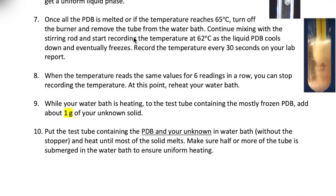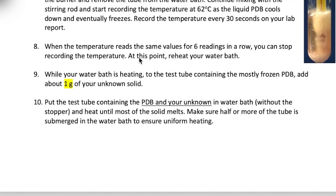As the PDB cools, its temperature will decrease. Start recording the value of the temperature when it reaches about 62 degrees Celsius. Keep recording temperatures in 30 second increments until the value of the temperature stays constant for six readings in a row. At that point, you're done with the first part of the experiment.